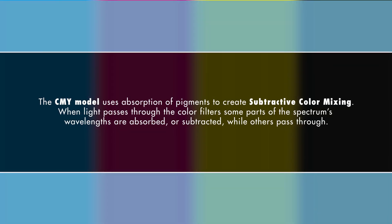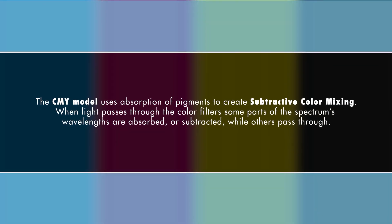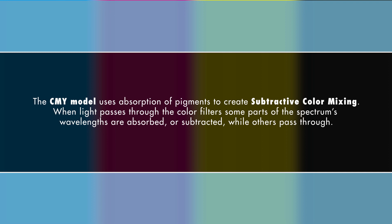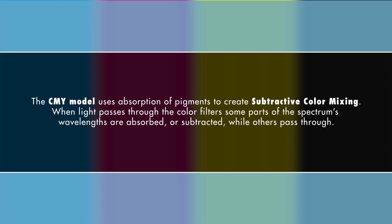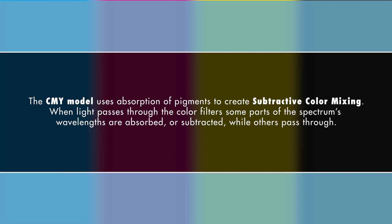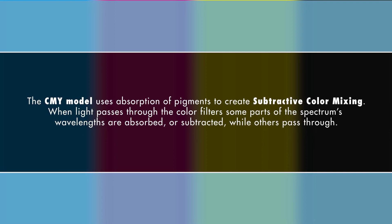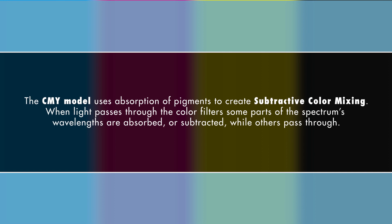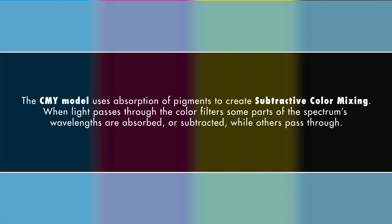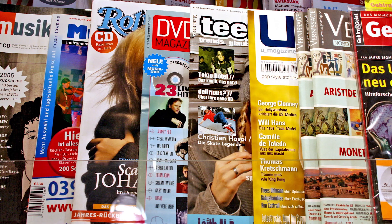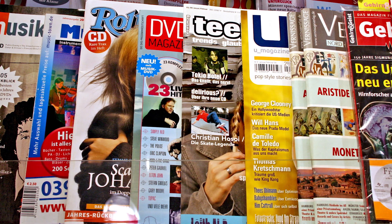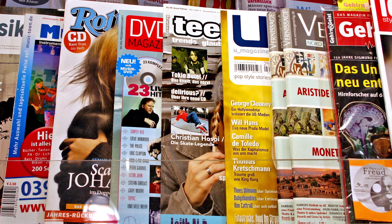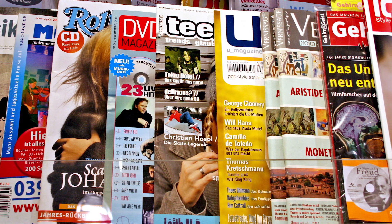The CMY model uses absorption of pigments to create subtractive color mixing. When light passes through the color filter, some parts of the spectrum's wavelengths are absorbed or subtracted, while others pass through. Subtractive color mixing can be found in magazines, advertisements, and other printed material.